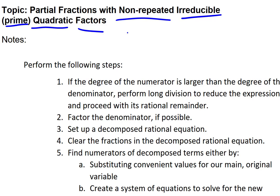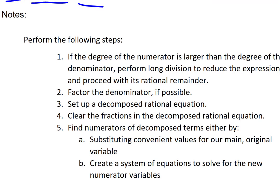The notes for this follow the same general steps no matter what case we're in. First, consider the degrees of the numerator and denominator. Second, factor the denominator if possible. Third, set up a decomposed rational equation. Fourth, clear the fractions. And fifth, find the numerators of the new fractions — either by substituting convenient values or using a system if needed.